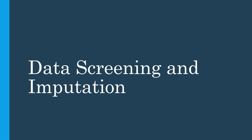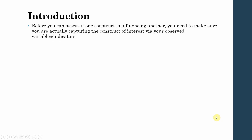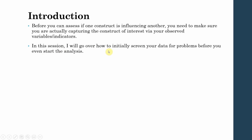In this session we are going to talk about data screening and imputation. Before you can assess if one construct is influencing another, you need to make sure you are actually capturing the construct of interest via observed variables or indicators. I will go over how to initially screen your data for data problems before you even start your analysis.